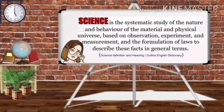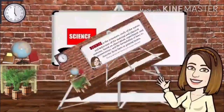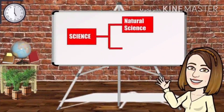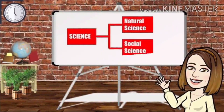Let's start by defining the concept of Science. According to Collins, it is the systematic study of the nature and behavior of the material and physical universe, based on observation, experiment, and measurement, and the formulation of laws to describe these facts in general terms. Science has two classifications: Natural Science and Social Science.